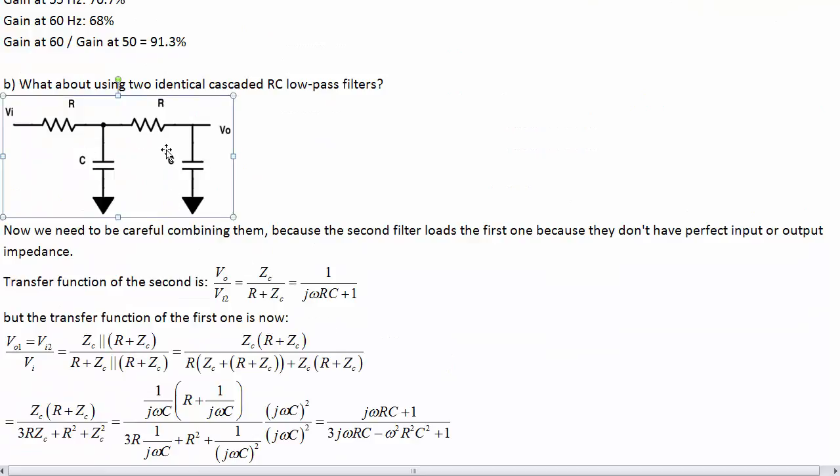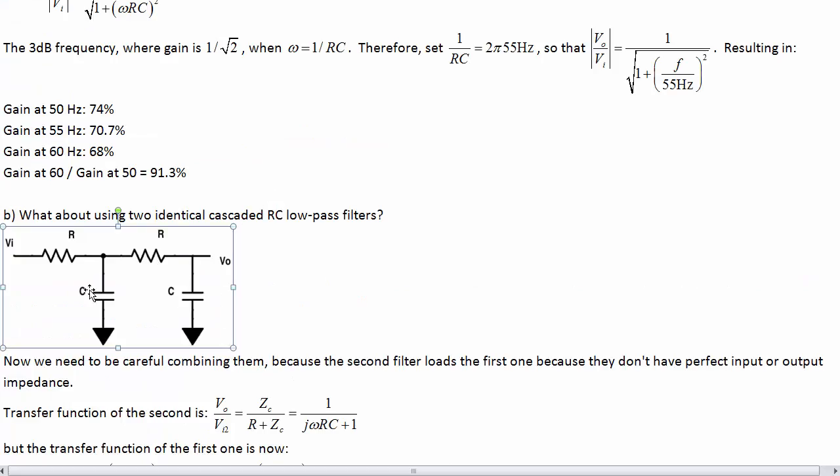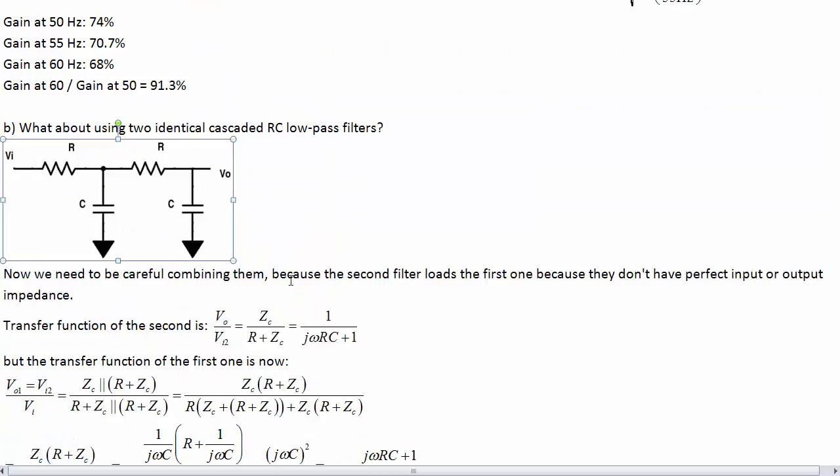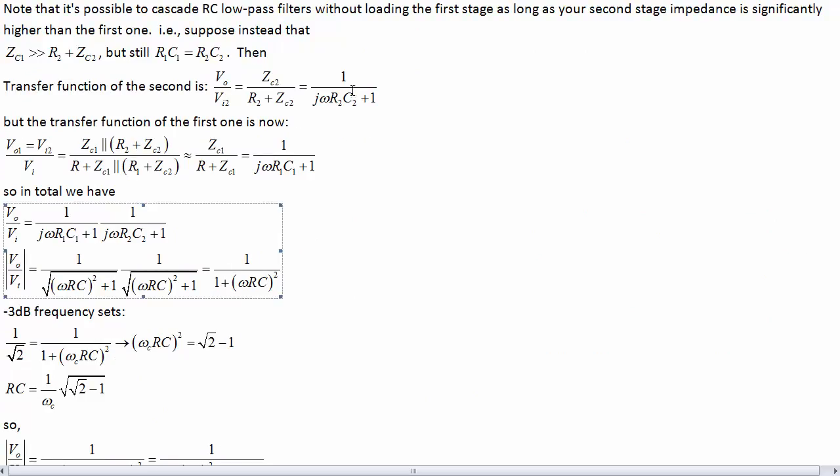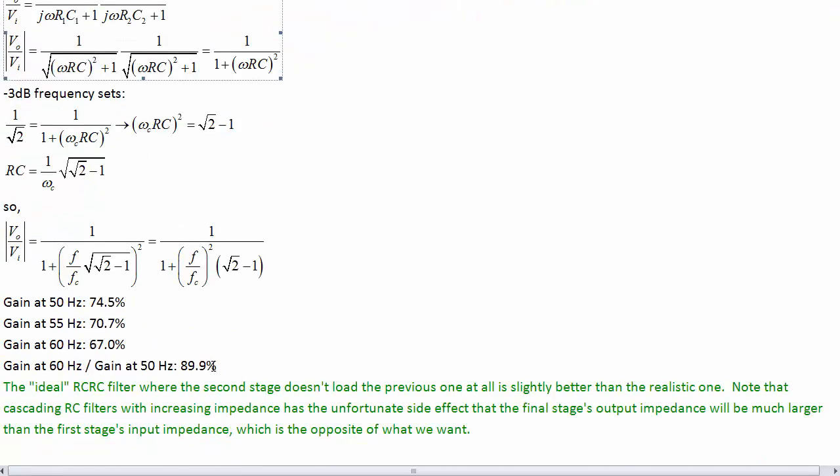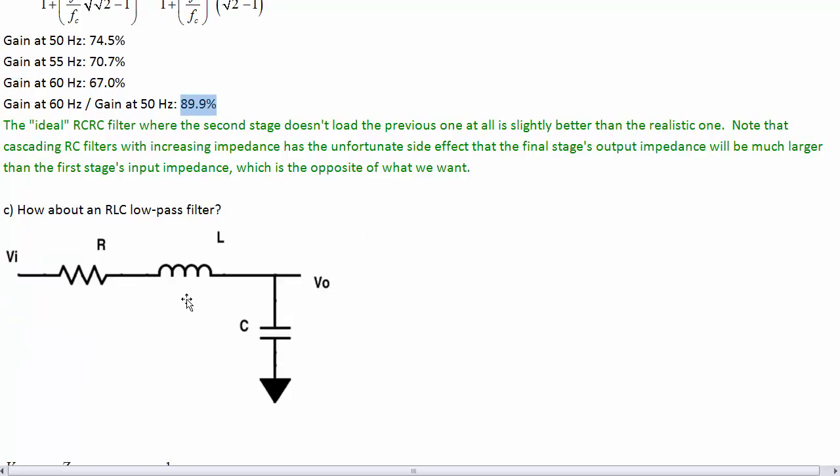If they're the same values, then the 3 dB frequency of this RC by itself is different than the 3 dB frequency of them acting together. But if this filter doesn't load this one, then the combined 3 dB frequency can be the same as their individual ones, and that makes filter design a little bit easier. So, analyzing that example, we come up with this transfer function, 1 over 1 plus omega RC all-squared, and substituting into that, we get a little bit better performance. This is kind of the ideal RC-RC filter case.